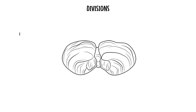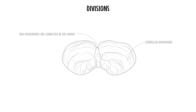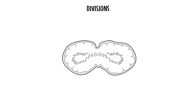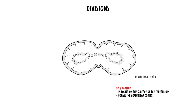The cerebellum can be divided in many ways. Firstly, the cerebellum has two hemispheres. These are connected by a narrow midline area called the vermis. Similar to other structures within the central nervous system, the cerebellum is made up of grey matter and white matter. The grey matter is found on the surface and forms the cerebellar cortex, and the white matter is found underneath the cerebellar cortex.